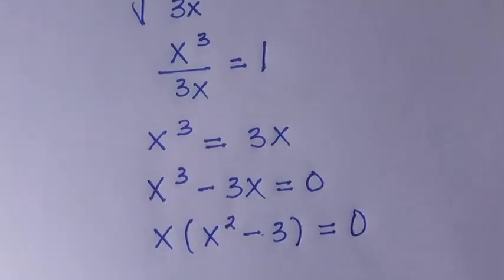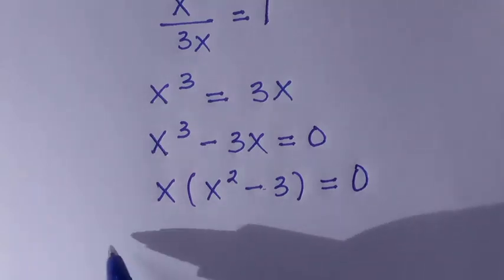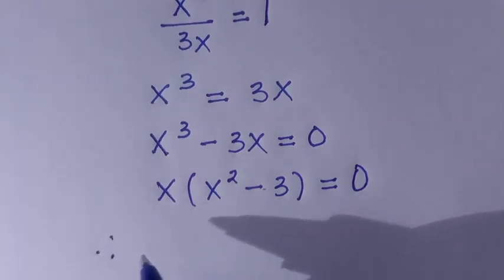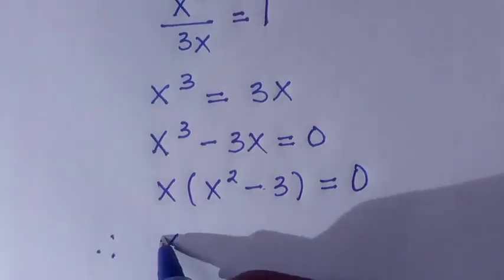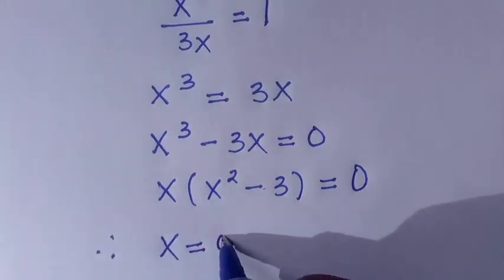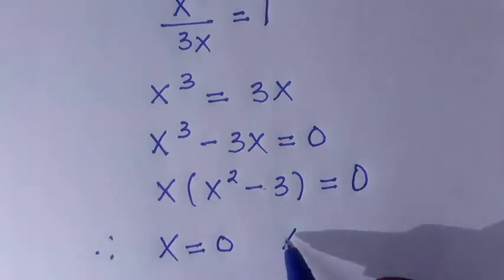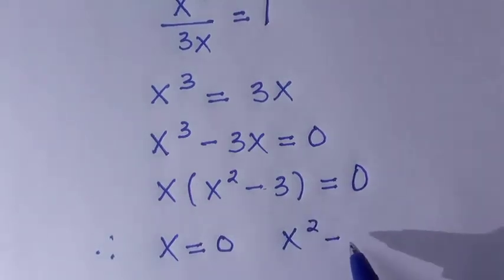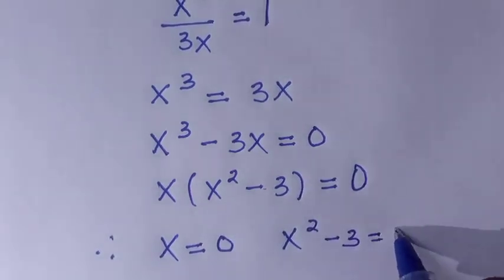I did this because there is a cubic equation, therefore, we have x equals 0 or we can still have x to the power of 2 minus 3 equals 0.